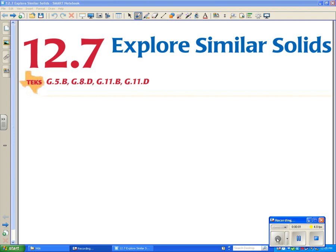12.7 explores similar solids. Similar means that all of the dimensions of two particular figures are proportional, given that the two figures are the same type of figure.